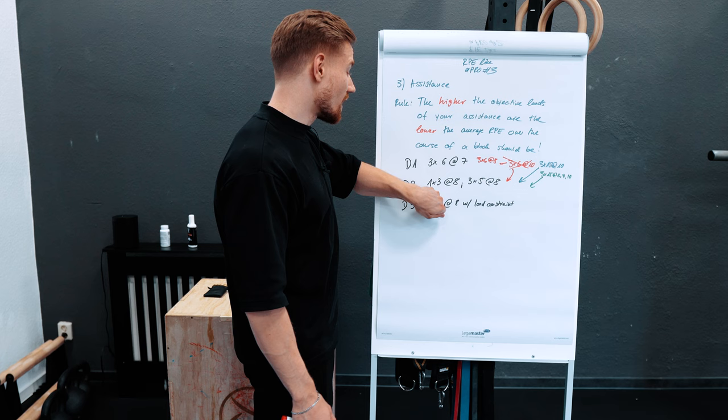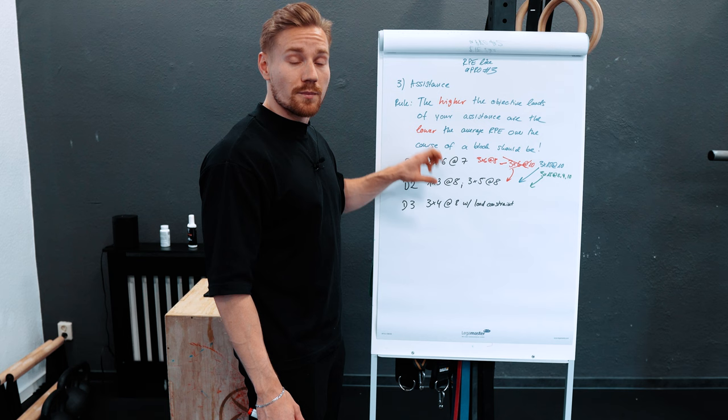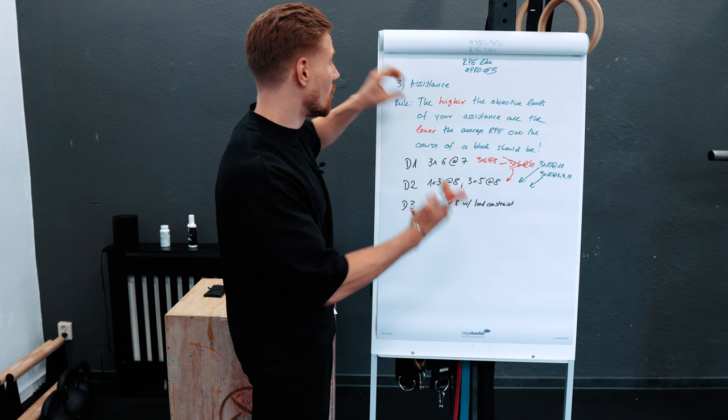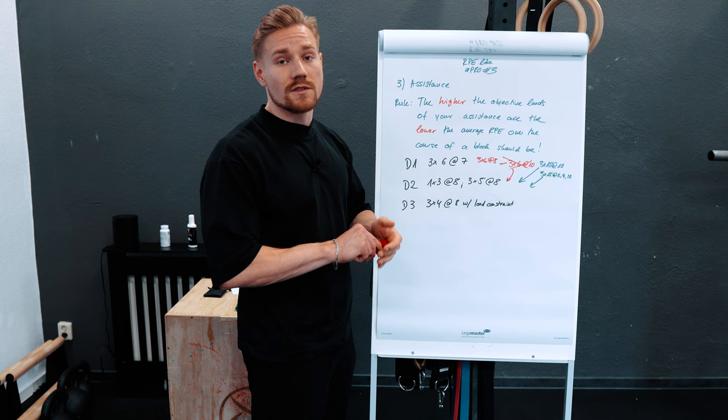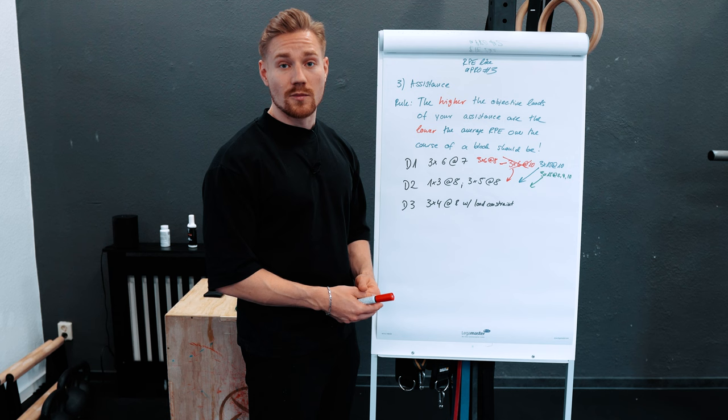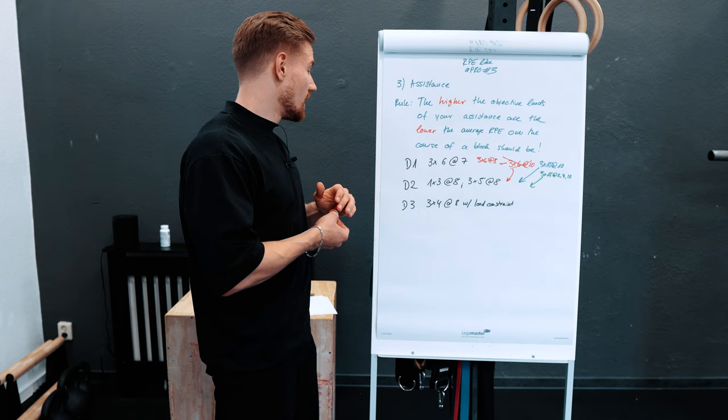This is also true when combining with rule number one: the higher the frequency of your assistance, the lower the RPE average over the course of a week — and also over the course of a block — needs to be. If you train something more often, you cannot train it as intensely because recovery time is reduced. Rule number three for assistance is essentially the combination of rule number one and rule number two applied to assistance work.